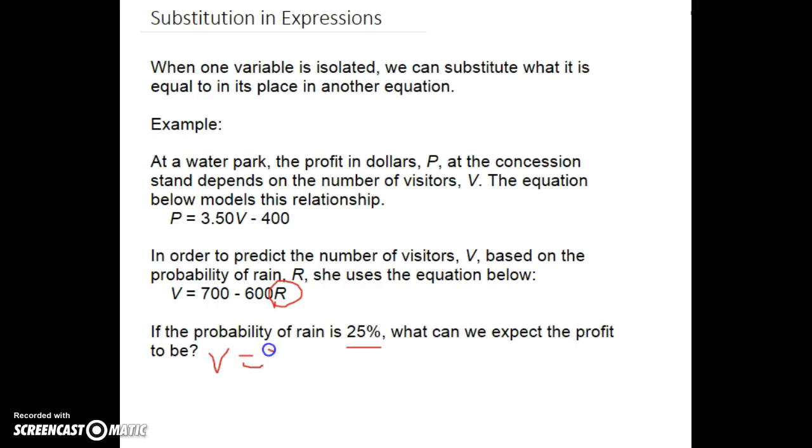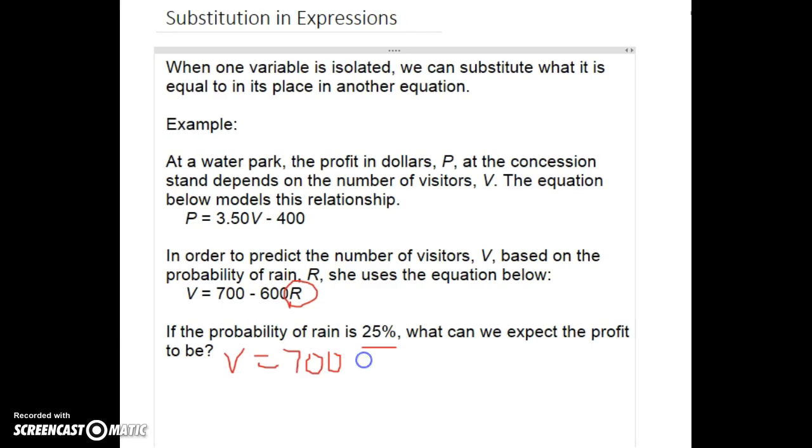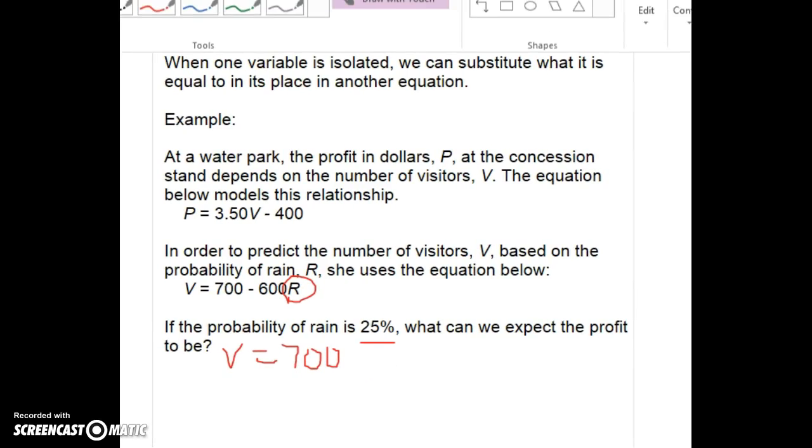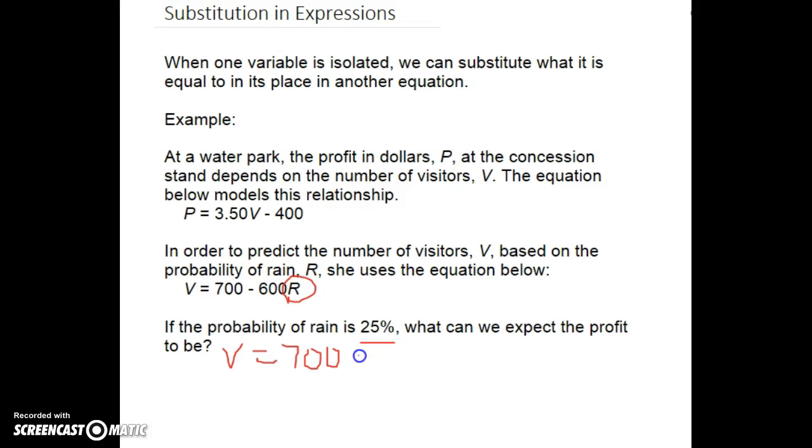So the number of visitors is 700 minus 600 times 0.25. So 600 times 0.25, I get 150. So 700 minus 150 is 550.